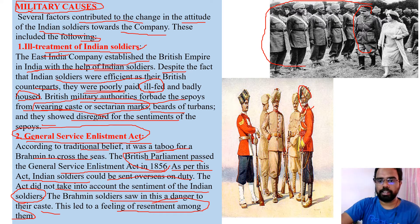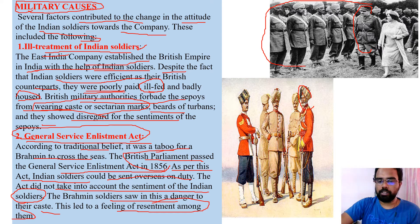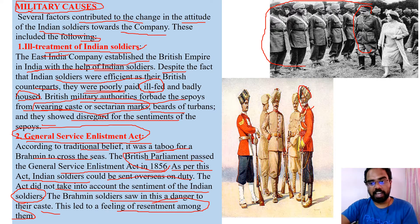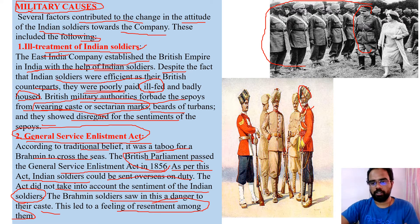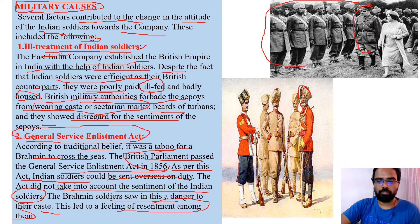The Brahmin soldiers saw this act as a danger to their caste. This led to a feeling of resentment - they felt the British were wantedly trying to make them give up their practices. They were now very angry with the British. According to this act, soldiers had to travel on sea and fight outside the country on behalf of the British, but Brahmins believed they would lose their caste by traveling on sea.